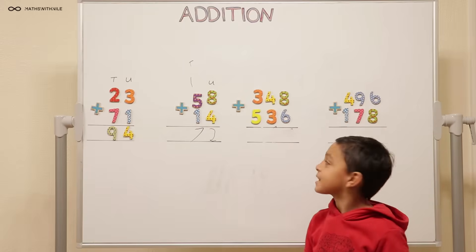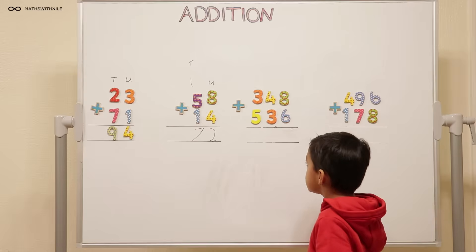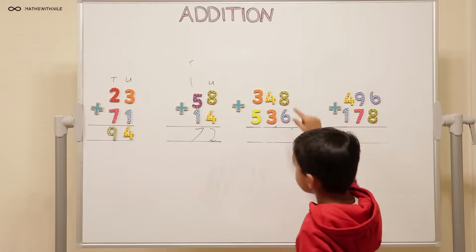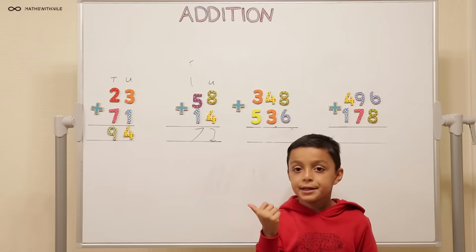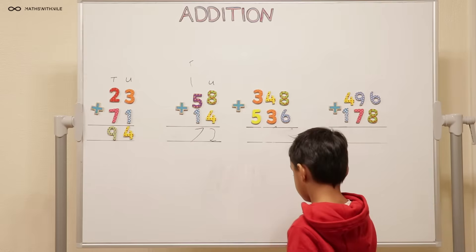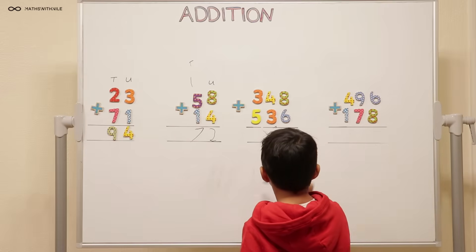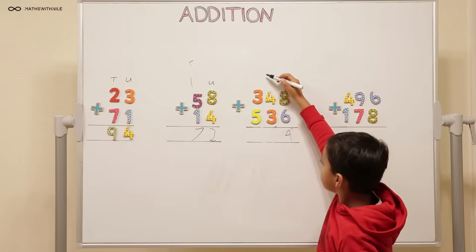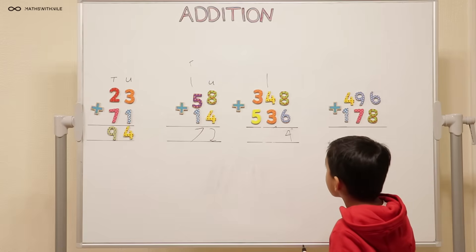We're going to do two more questions. Three hundred and forty-eight plus five hundred and thirty-six. So where are you going to start? The units. Eight, nine, ten, eleven, twelve, thirteen, fourteen. Fourteen. So what are you going to do with the fourteen? Because you have two digits and you're adding one column. I'm going to write the four here and put one here. We're going to carry over the one because we have four units and one ten. Very good.